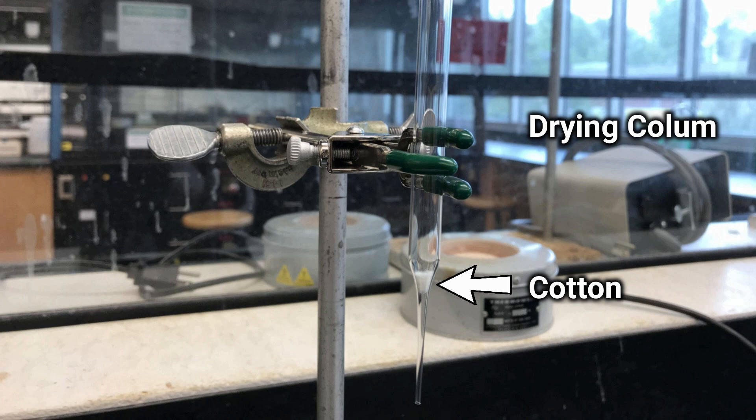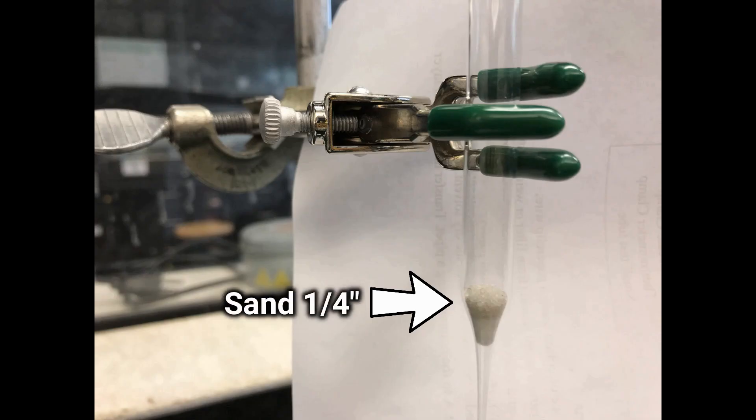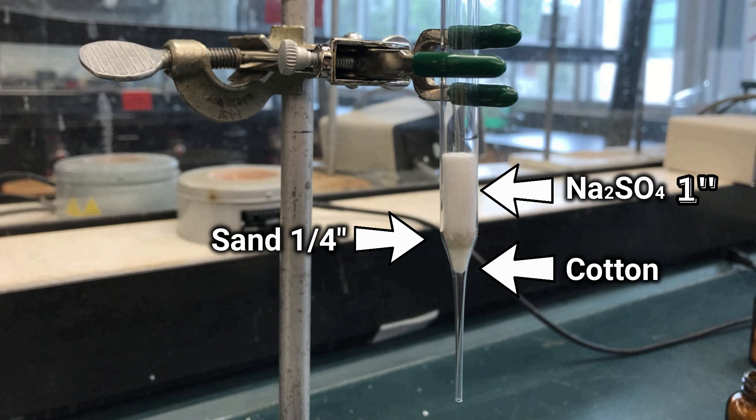Place a small piece of cotton at the end of the pipette. Use a paper clip to push it to the bottom. Next, add about a quarter inch of sand. Make sure to keep the sand level, followed by 1 inch of sodium sulfate.